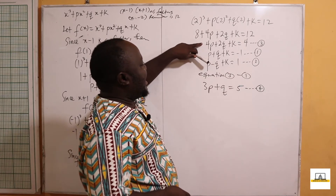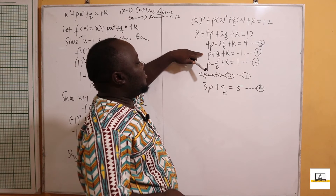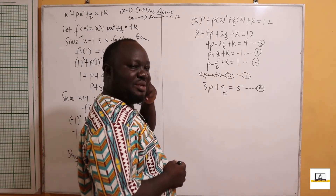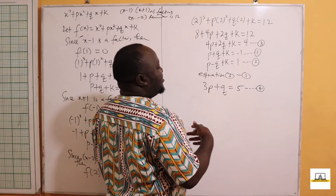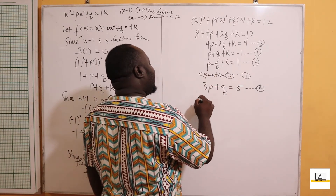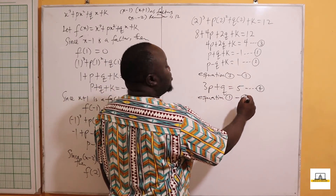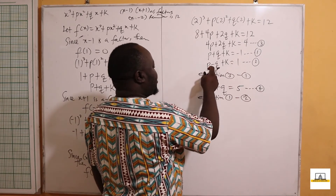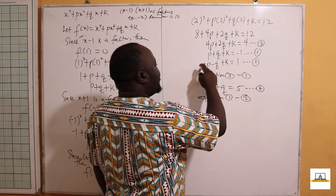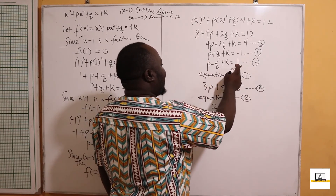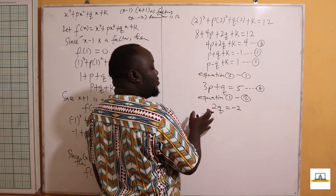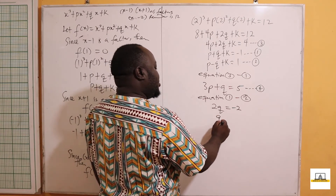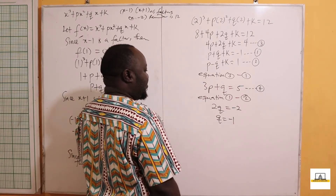Now using Equation 1 minus Equation 2 to eliminate k again: p - p = 0, q - (-q) = 2q, k - k = 0, and -1 - 1 = -2. So 2q = -2, and dividing both sides by 2, q = -1.